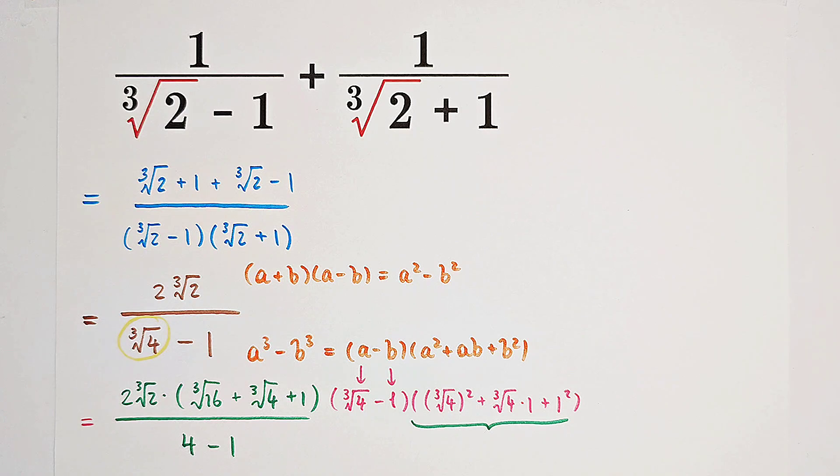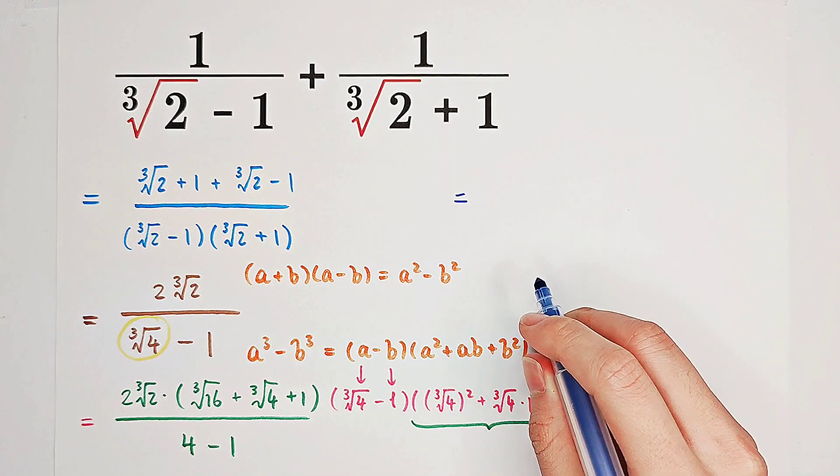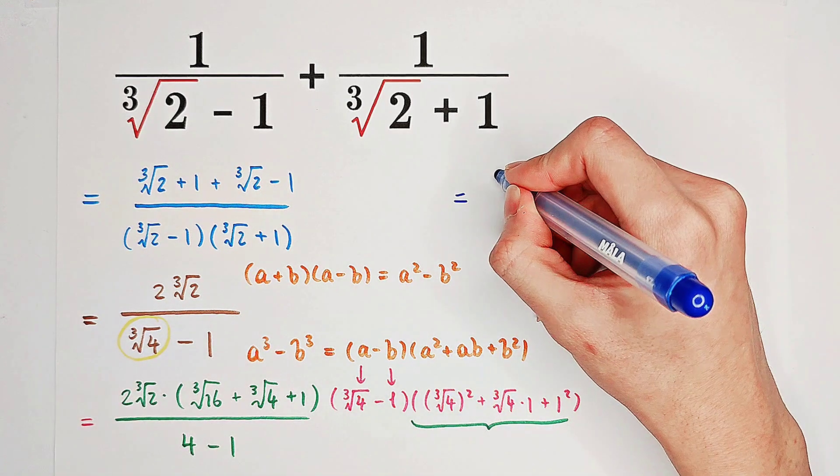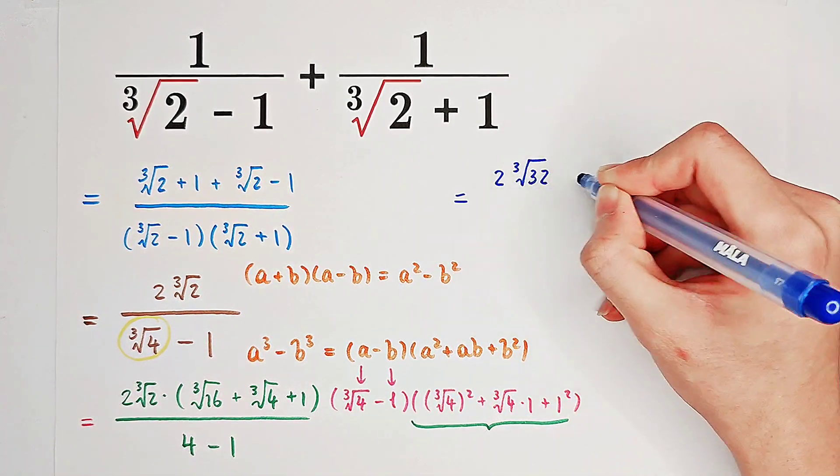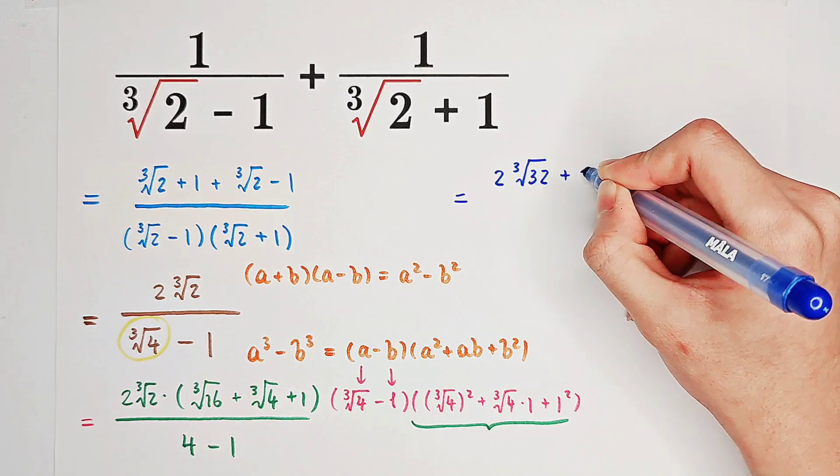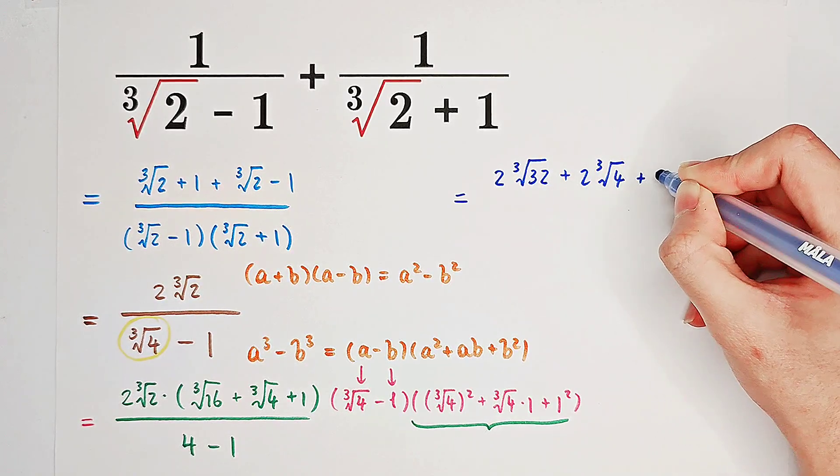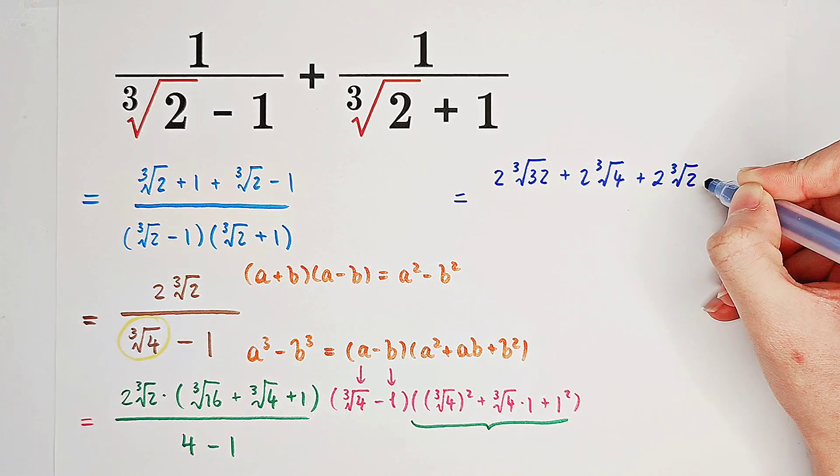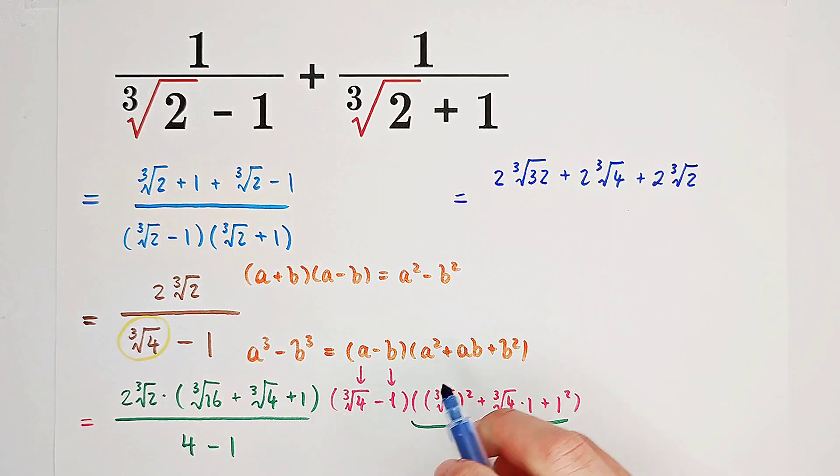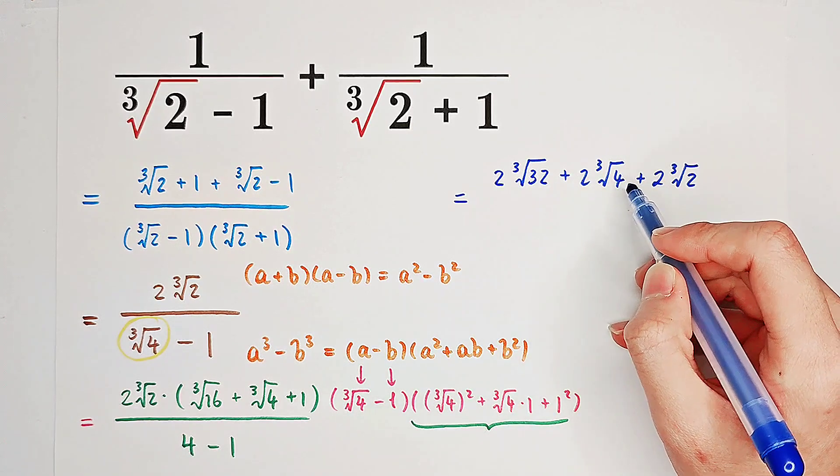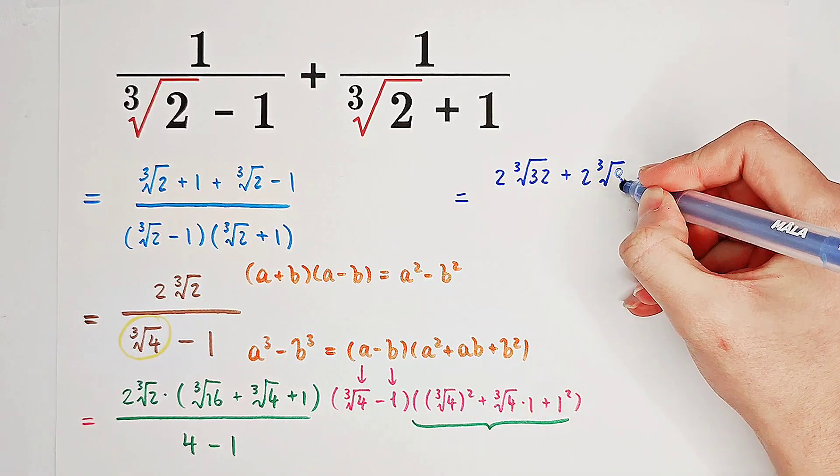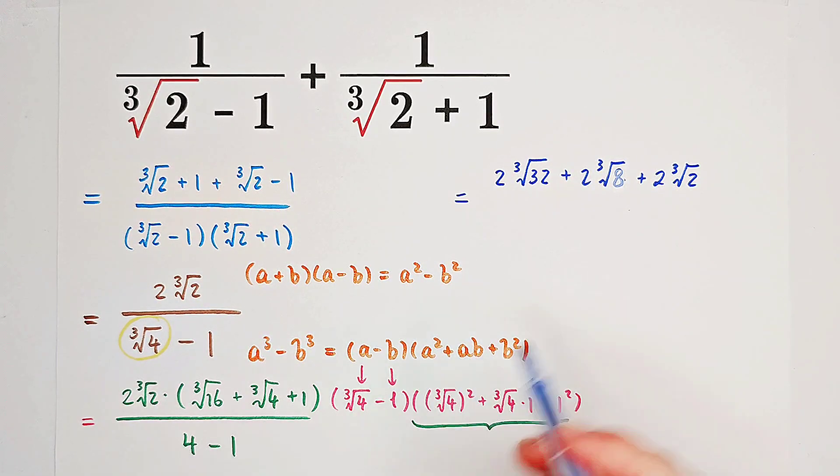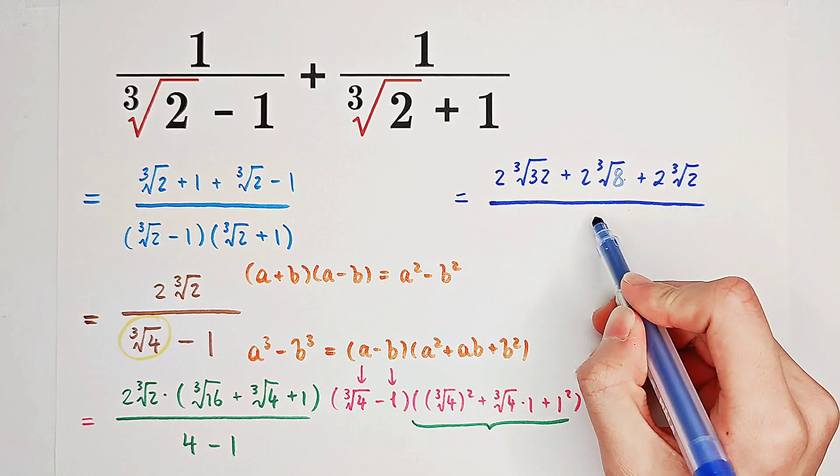What about our numerator? Not really. So now you can see, we get 2 times the cube root of 32 plus 2 times the cube root of 4 plus 2 times the cube root of 2. Ah, sorry. It is 2 times the cube root of 8 here. Sorry, here is not 4, here is 8. Because we have 2 times the cube root of 2 times the cube root of 4, which is 2 times the cube root of 8, over 3.